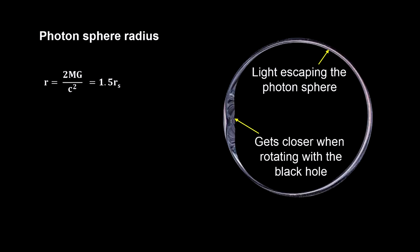It is flattened on the left because light rotating with the black hole's rotation can get closer to the horizon than light rotating against the black hole's rotation.